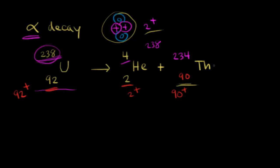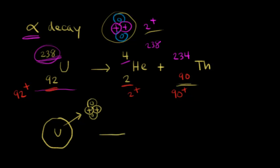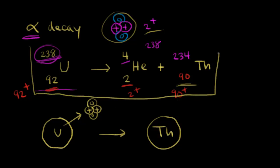If we think about what's happening visually: we start with an unstable uranium nucleus. It ejects an alpha particle, and what's left behind is the thorium nucleus. This is just a visual representation of what's going on in our nuclear equation.